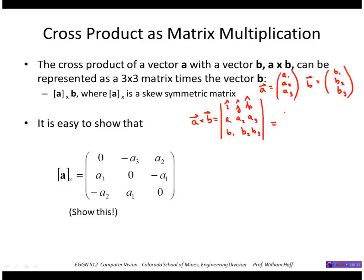And calculating that determinant will give me A2 B3 minus A3 B2. The second element is A3 B1 minus A1 B3. And the third element is A1 B2 minus A2 B1.